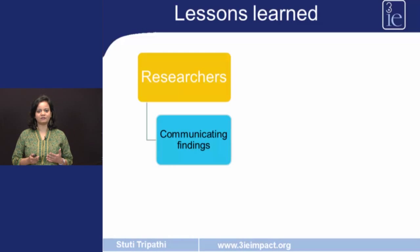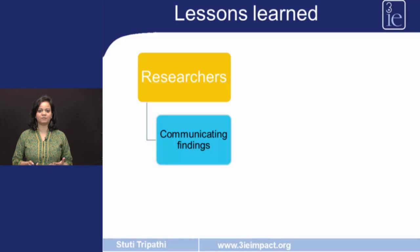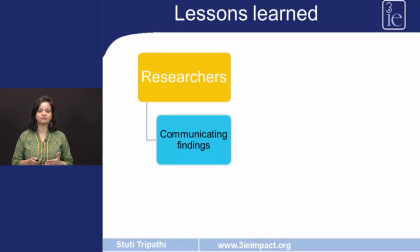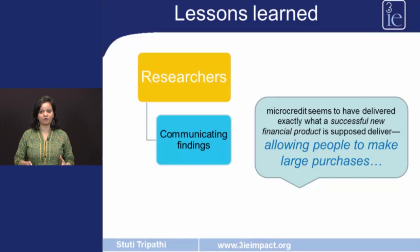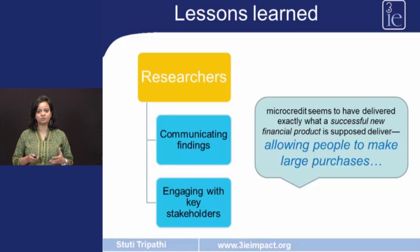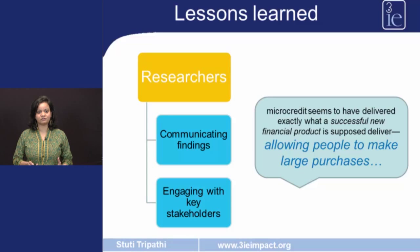So what are some of the lessons we can draw from the Spandana study? The foremost lesson is that it is important to communicate findings. The researchers communicated these findings and put them in the public domain for discussion and debate. However, it also led to a lot of bad press, which meant that messaging needs to be more controlled. The researchers later came out in defense of the microfinance sector, saying that microcredit as a product had achieved exactly what is expected of a financial product — it allowed people to make larger purchases. Secondly, it highlighted the need to engage with stakeholders on an ongoing basis to ensure buy-in on the study design and findings, especially when findings are negative.